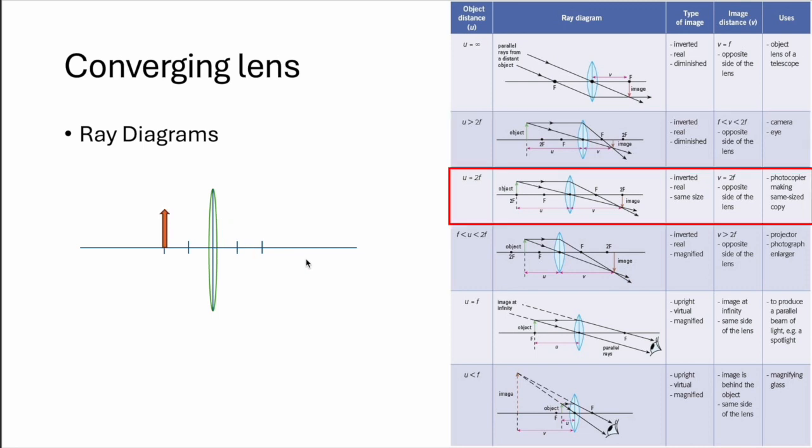And the fun one will be this one, case number three, which is good to remember because 2F equals 2F, the size you draw a straight one, the bent one, and you will realize that it will also give you the same size of image as the object. So things like photocopy machine.